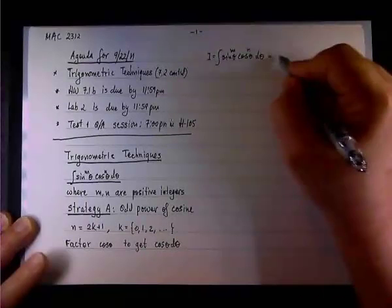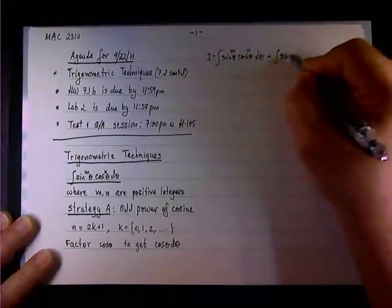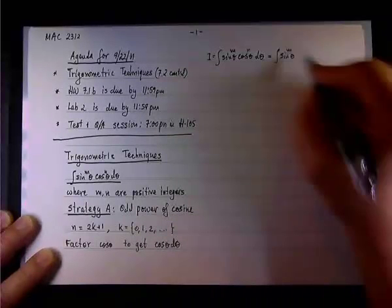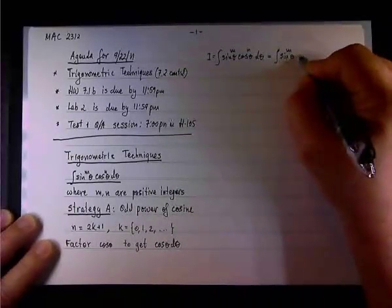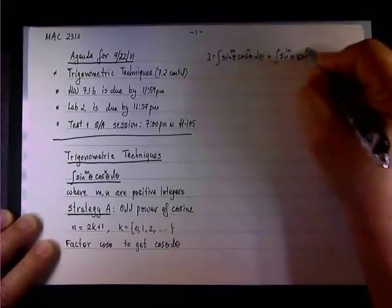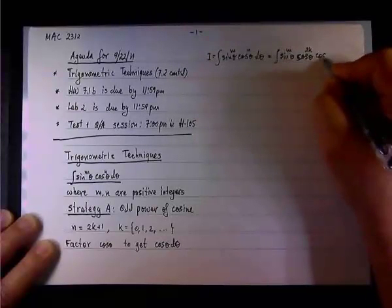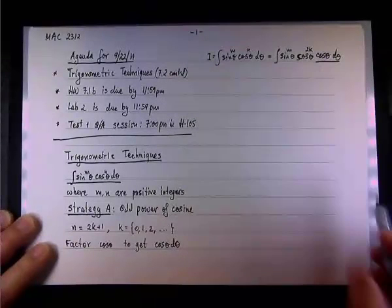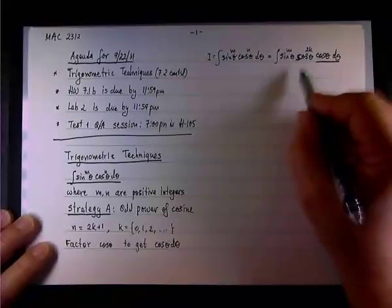Okay, so the first thing I'm going to write it as the integral of sine theta to the n power, and then instead of n, we have 2k plus 1. So I'll break it down into cosine theta to the power of 2k times cosine theta to the 1 power. So we have what we wanted, we have this isolation.